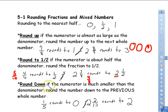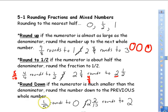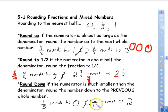Rounding down: if the numerator is much smaller than the denominator, round the number to the previous whole number. For a proper fraction like 1/5, this number is nearly zero — only one slice out of five — so it rounds to zero. For two and 2/13, we have thirteen slices with only two remaining — you must compare to the denominator, not other numbers.